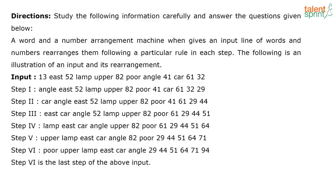This question is on machine input-output. There is some operation done on the numbers to arrive at the numbers in each step. So let us look at the logic that has been used here. The input is: 13 east, 52 lamp, upper, 82 poor, angle, 41 car, 61, 32.